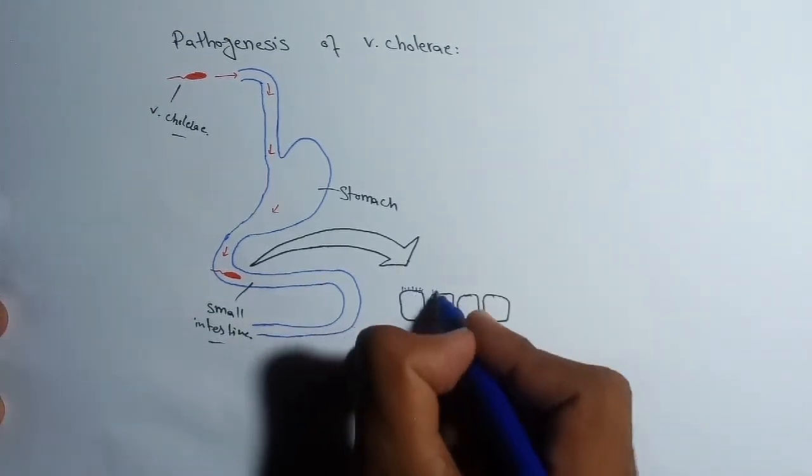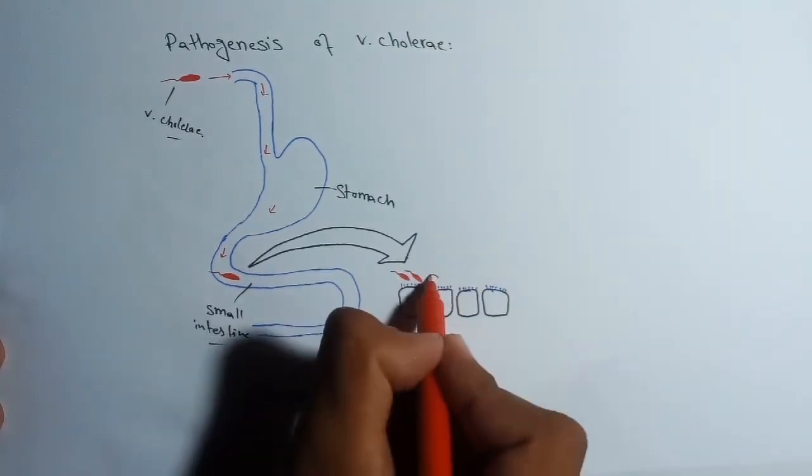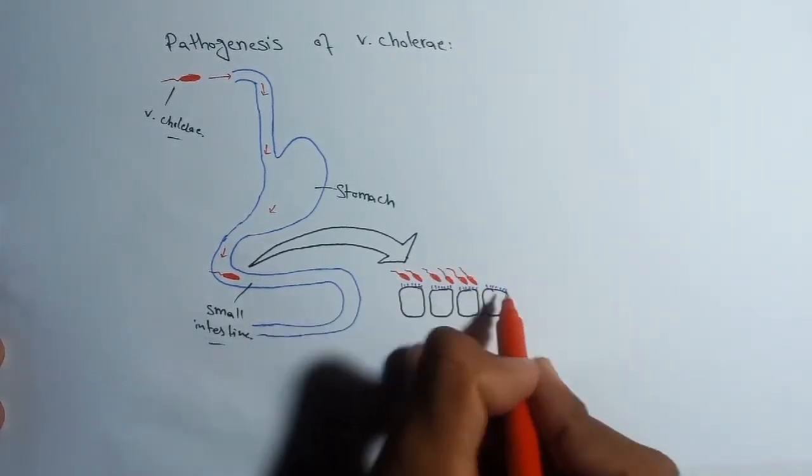Here we can see these are the enteric cells, and above them Vibrio cholerae are present.